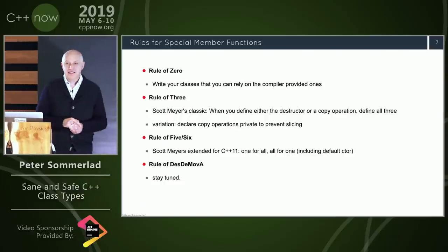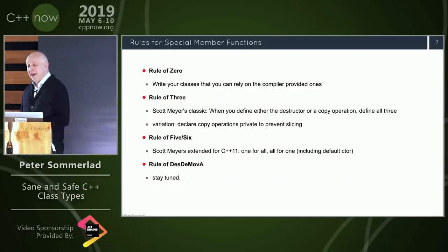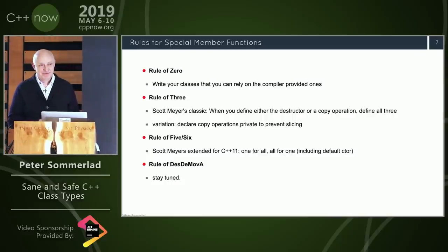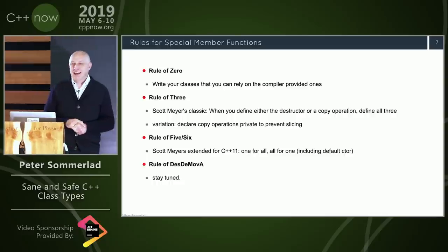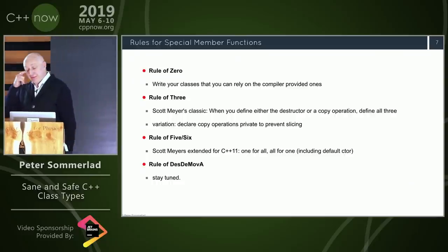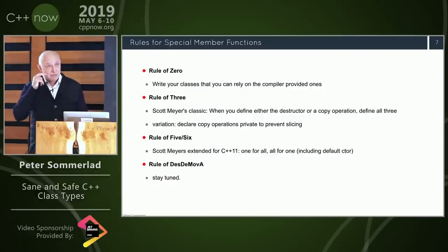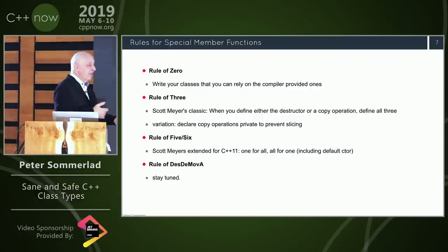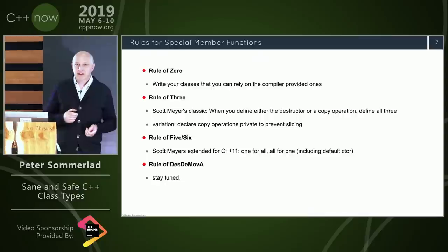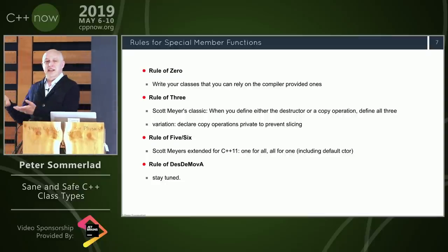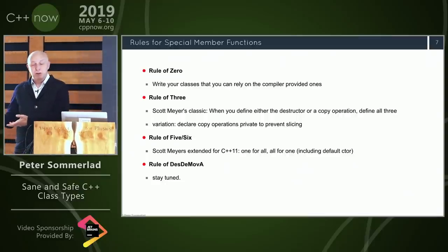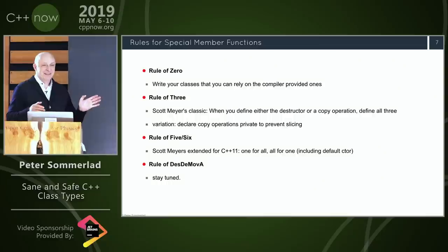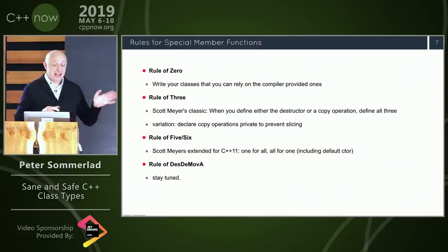The interesting thing is: code that is not there usually cannot be wrong. Code that you don't write has no bugs. There are guidelines out there that tell you to write code that the compiler already provides automatically — don't do that. Throw it away. You have fewer chances for bugs.